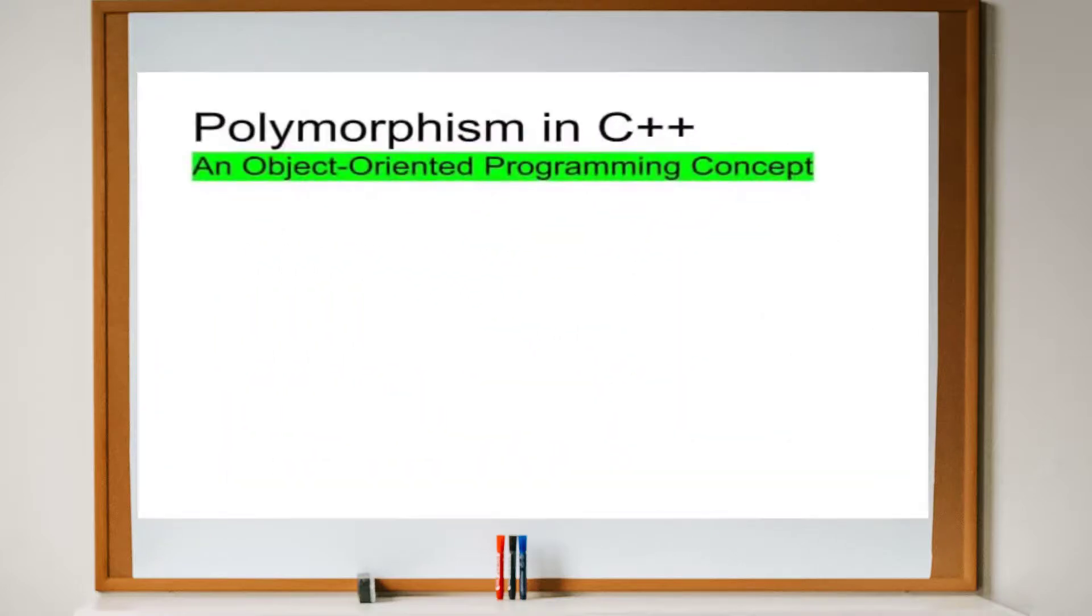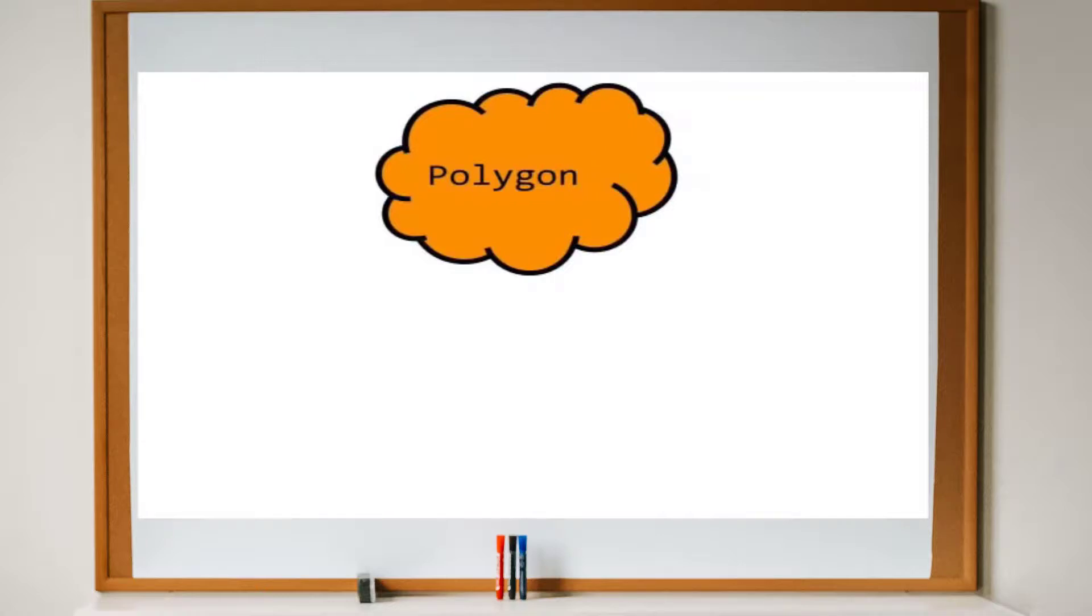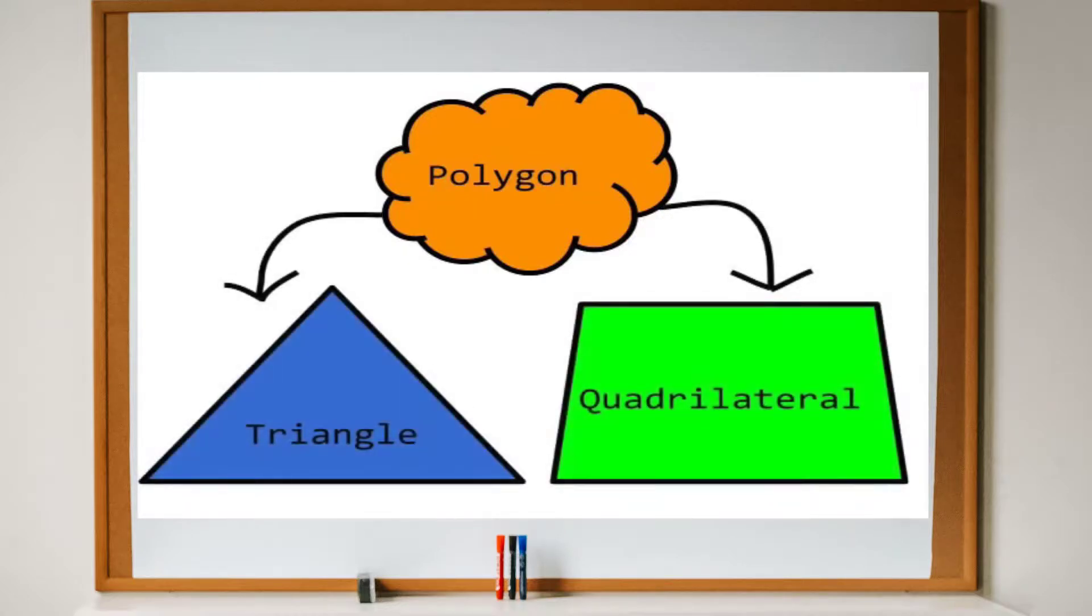In this tutorial, we will be looking at polymorphism in C++. Like inheritance and composition, polymorphism is another fundamental concept in object-oriented programming. Basically, in polymorphism, you start with a vague description for a family of objects. From there, you can make the description more specific depending on the context or particular family member.